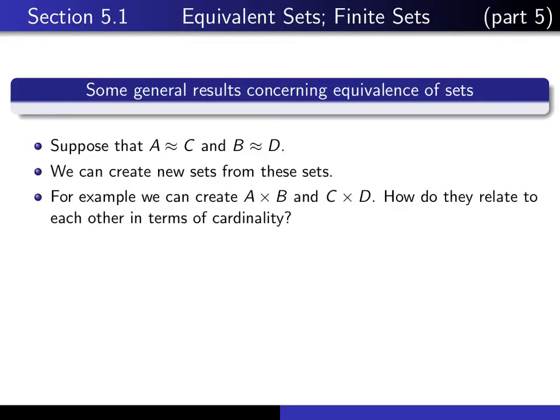For example, we can create these Cartesian products, A cross B and C cross D. If we know that A and C have the same cardinality, and B and D have the same cardinality, do you think that we can say that these sets have the same cardinality?